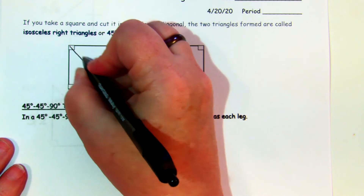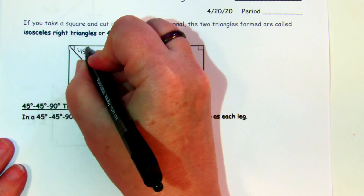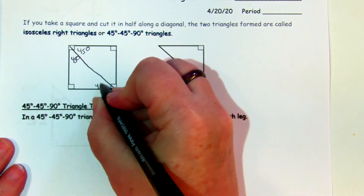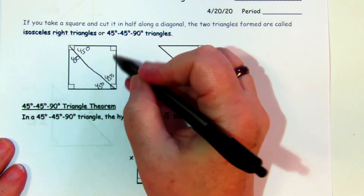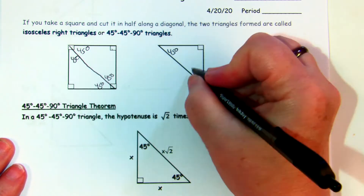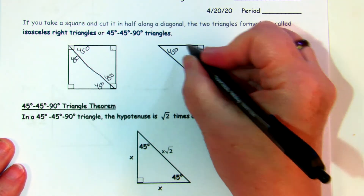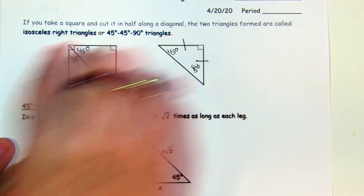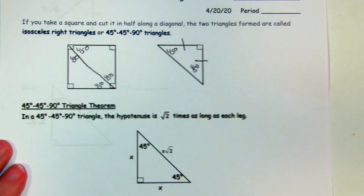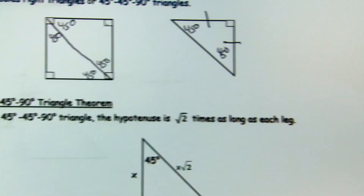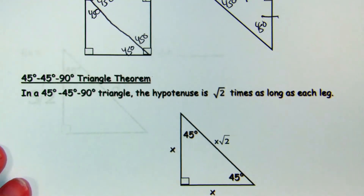If this is a 90-degree angle and we cut it in half, each one is 45 degrees. So it's called a 45-45-90 triangle because these angles are 45 and this one is 90. These sides are the same because it was a square — it's an isosceles right triangle. There's a theorem called the 45-45-90 triangle theorem that tells us about the relationships between the sides of the triangle.